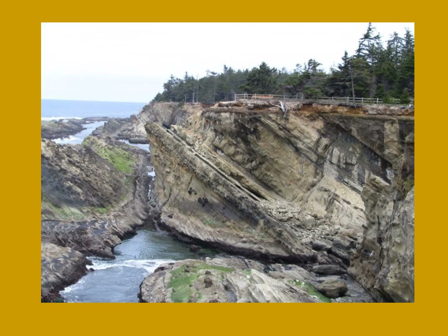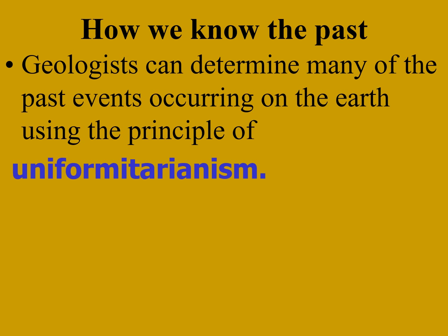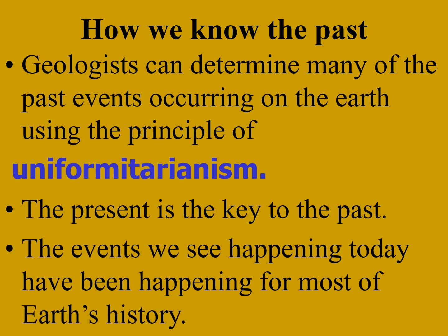You look at rock here — you see these tilted sedimentary beds, and then they're truncated, cut off at the top. How could that happen? Vast amounts of time. How do we know the past? Geologists can determine many of the past events occurring on Earth using the principle of uniformitarianism. It simply means the present is the key to the past. The events we see today have been happening for most of Earth's history. Those processes, if you allow them to occur over billions of years, would make the Earth we see today — uniformitarianism.